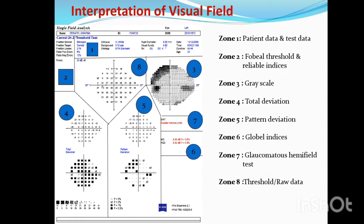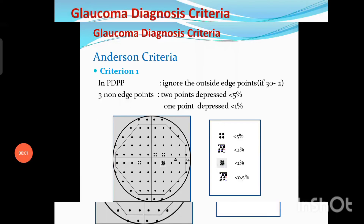These are the zones of the visual field interpretation report. We have to analyze the visual field report using criteria. The first is Anderson criteria. Criteria 1: the pattern deviation probability plot has 3 or more points outside — from the 30-2 field report, we ignore the outermost edge points. The remaining points are 54 points. We look for 3 points that are depressed below 5% of the normal population, and one of those should be below 1% of the population.